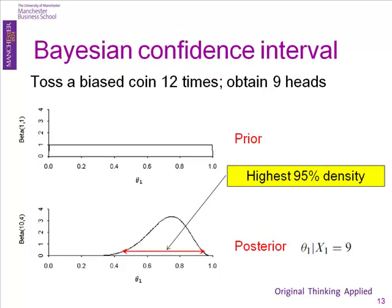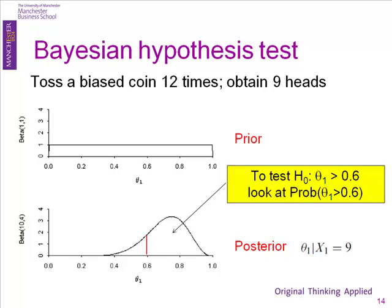If you want a confidence interval, that's easy — confidence intervals for Bayesians are a doddle. You want the probability that a parameter lies between certain values to be 95%, so you just look for the highest 95% area. The probability that theta lies between there and there is 95% — intuitive. If you want to test the hypothesis that theta is greater than 0.6, the probability it's greater than 0.6 is the area under that curve, giving you a p-value immediately without wondering what on earth an F-test was.